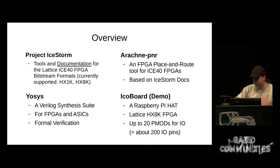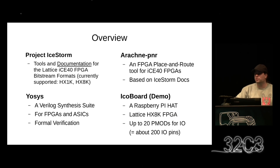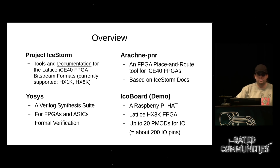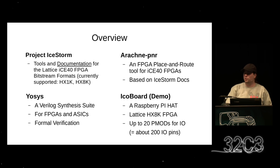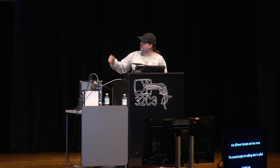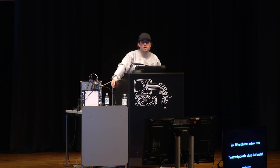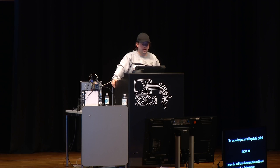The second project I'm going to talk about is Arachne PNR. Arachne PNR is a place and route tool for the ICE40 FPGAs and it's based on the IceStorm documentation. I wrote the IceStorm documentation and then I was lucky enough to find someone — Cottonseed is his name — to write this Arachne PNR place and route tool based on the documentation I wrote.